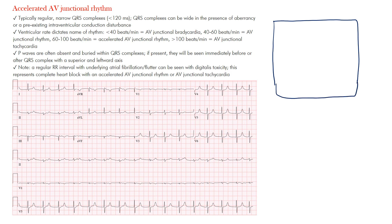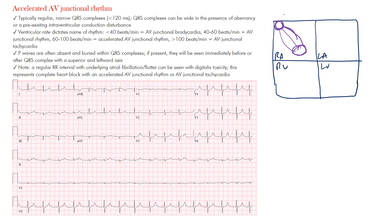Let's review our anatomy using our box diagrams to understand where this rhythm is coming from. We have the right atrium, left atrium, right ventricle, and left ventricle. Our conduction system starts at the sinus node — the sinoatrial or SA node — high in the right atrium near the superior vena cava, with internodal pathways leading to the AV node and a Bachmann bundle going to the left atrium.